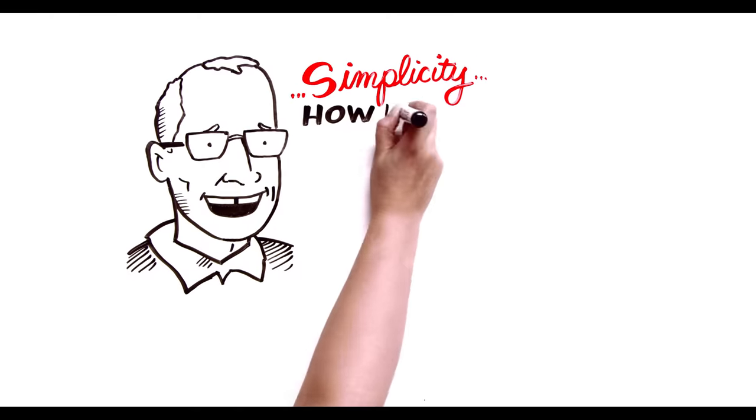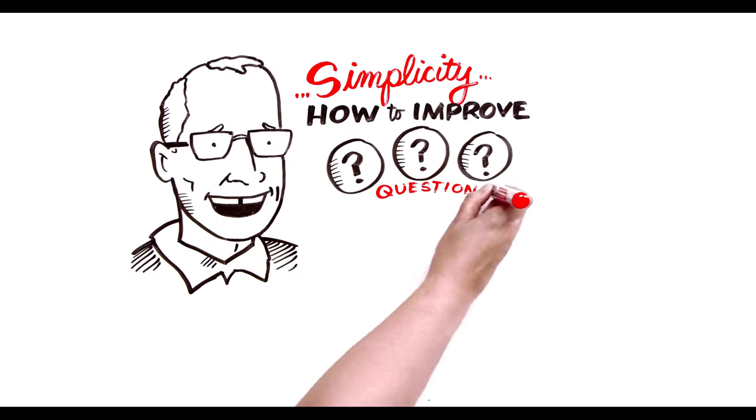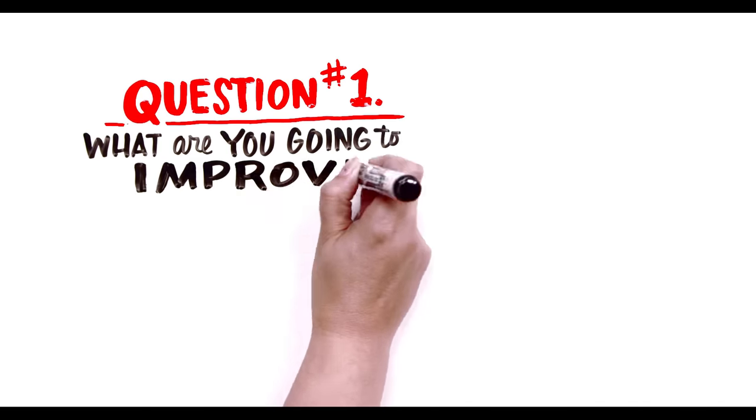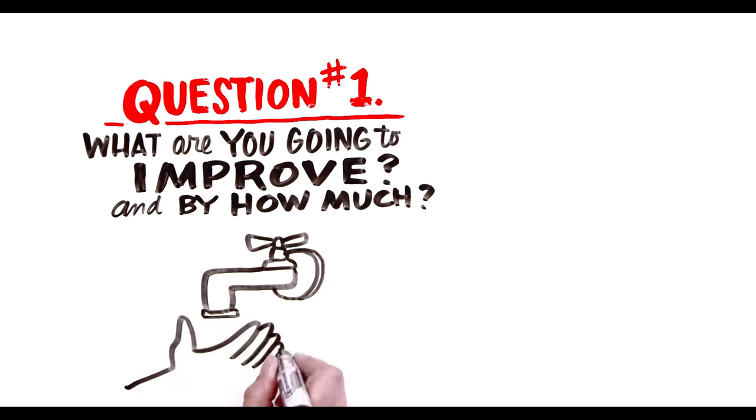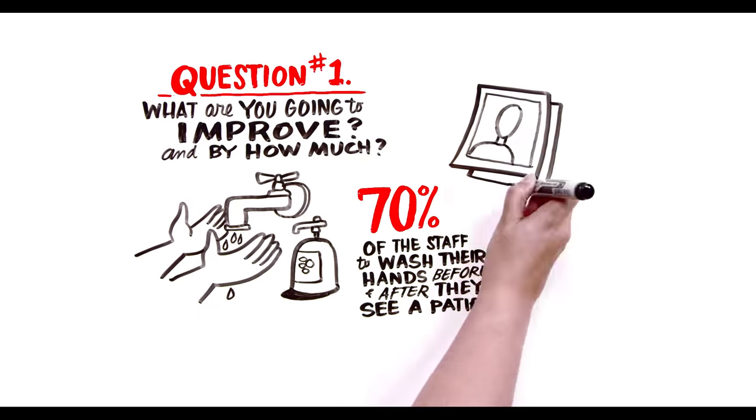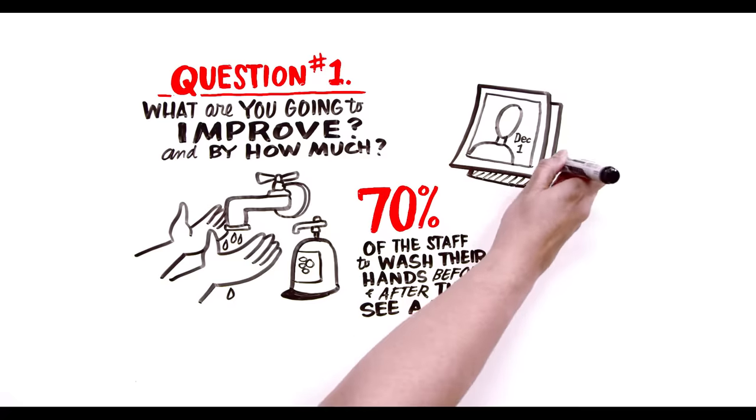So let's jump back to simplicity. How to improve seems to boil down to three questions in a cycle. Improvement starts by setting an aim. So question number one is: what are you going to improve and by how much? For example, we are going to get 70% of the staff to wash their hands before and after seeing patients by December 1st. Great. We have an aim.